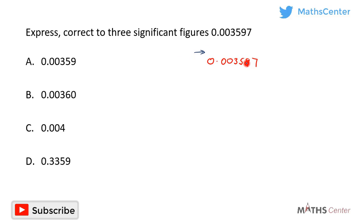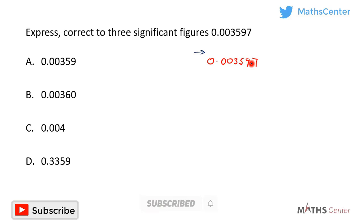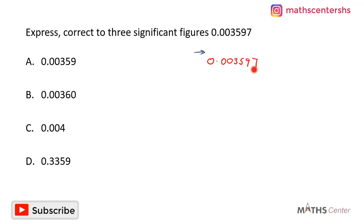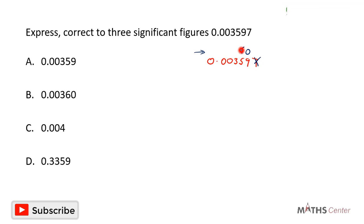We want to look at the number after 9 to decide rounding. If it's more than 5 we add 1 to 9; if it's less than 5 we leave it. The number after 9 is 7. Since 7 is more than 5, we add 1 to 9, giving us 10. So that digit becomes 0 and we add 1 to 5, giving us 6. Our number is now 0.00360.